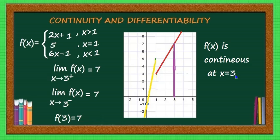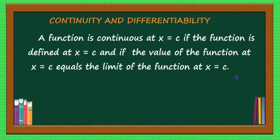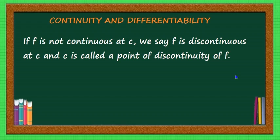To summarize: a function is continuous at x = c if, first, the function is defined at x = c, and second, the value of the function at x = c equals the limit of the function at x = c, where LHL = RHL. If f is not continuous at x = c, we say it is discontinuous at x = c, and c is called a point of discontinuity of f.